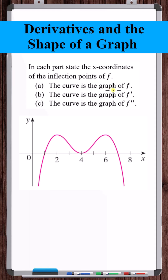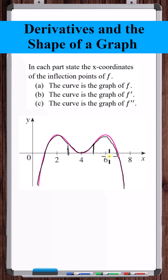Part A: the curve is the graph of f. So where does it change concavity? It's concave down, then switches to concave up, then switches back to concave down, and remains concave down. So the inflection points are at x equals 3 and x equals 5.